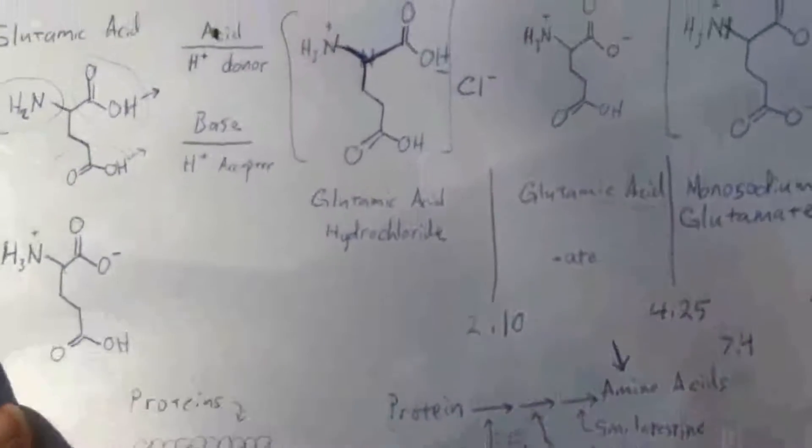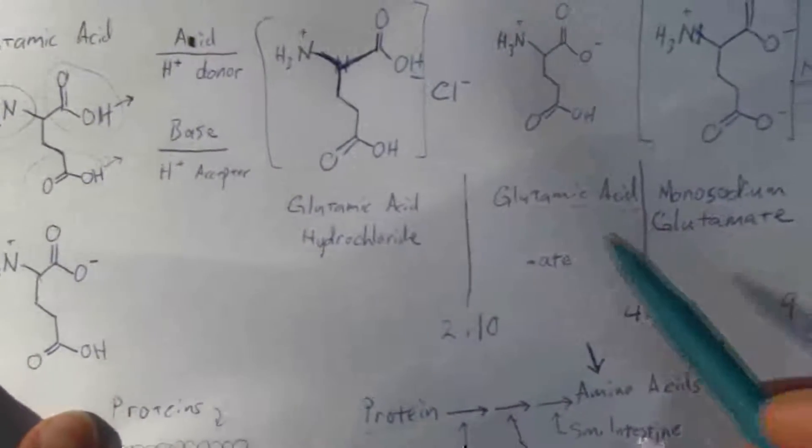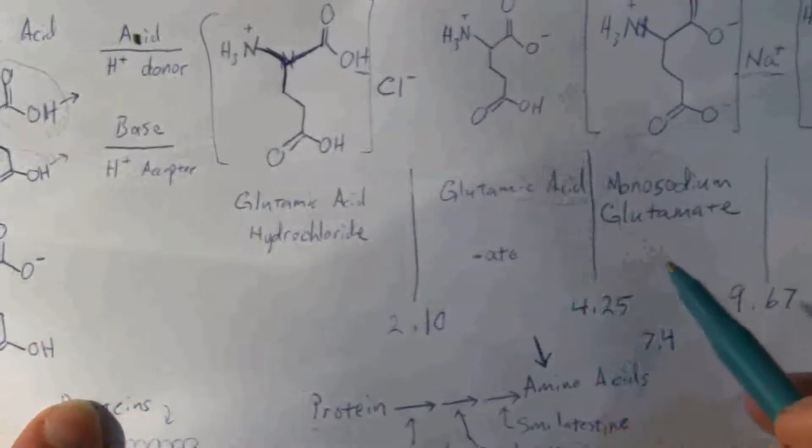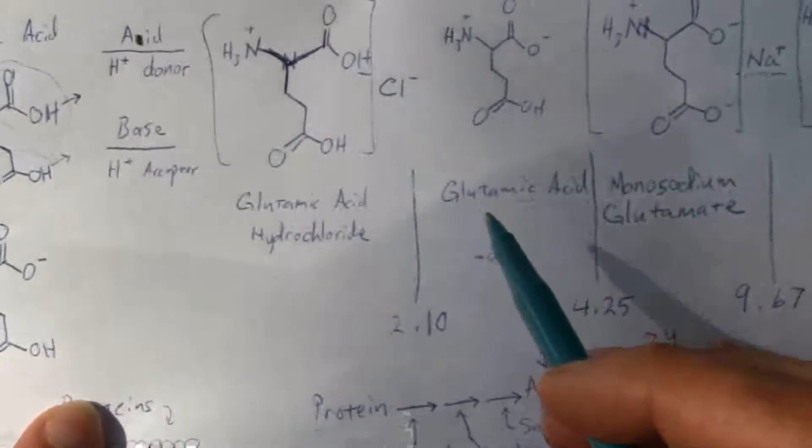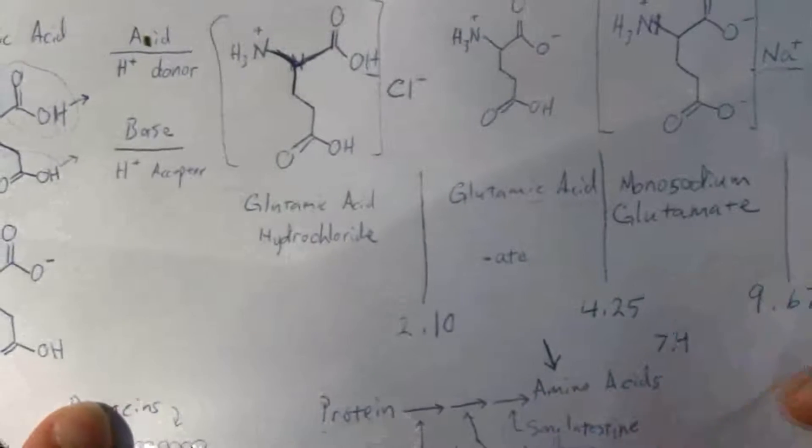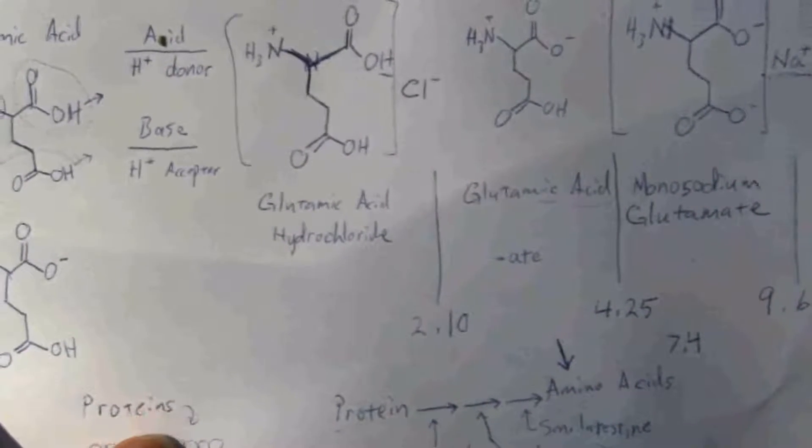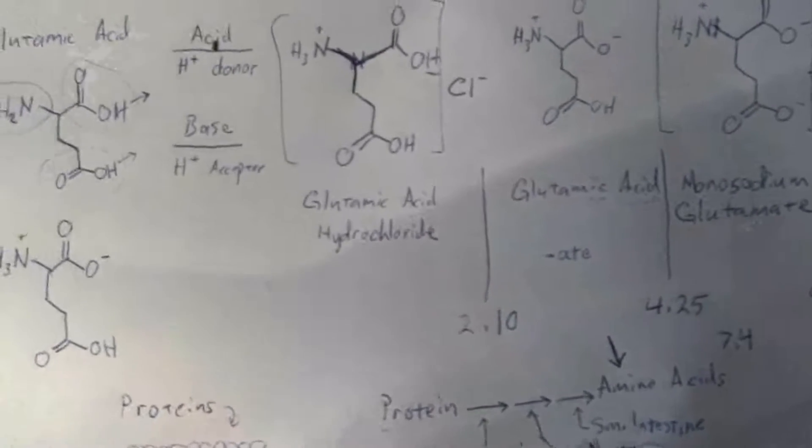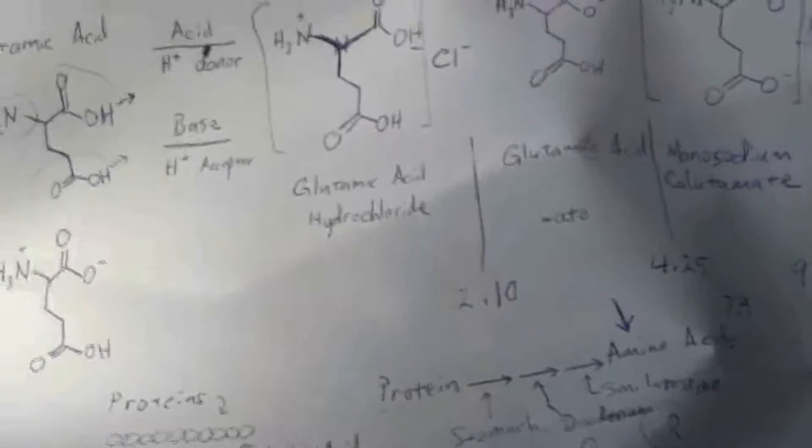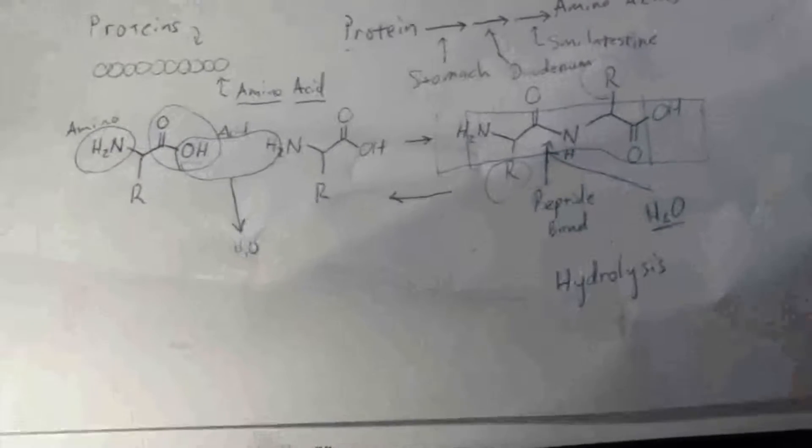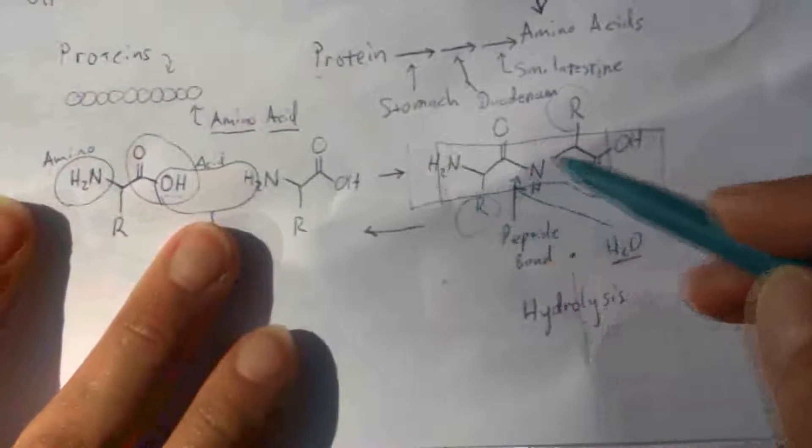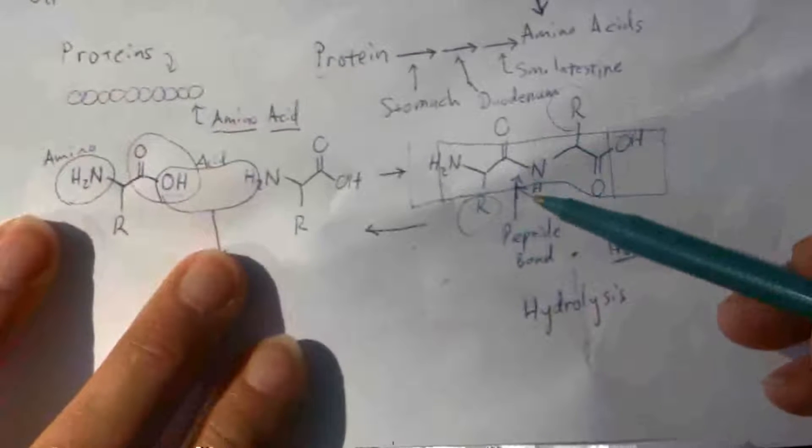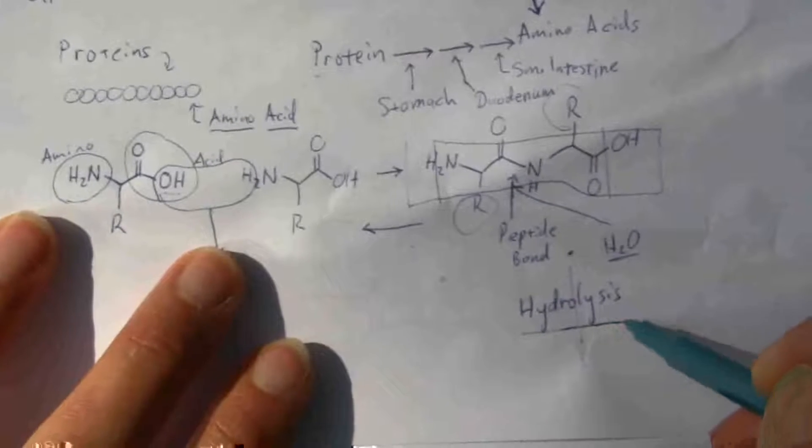Let me point out one other thing. There's another form of, or another name I should say, for this MSG. You could look for monosodium glutamate, MSG, or glutamic acid. You may not have any of that on the ingredients list. It might say something like hydrolyzed vegetable protein. What is hydrolyzed vegetable protein? You remember from earlier in the discussion. Here's our protein. What is that process of breaking those bonds called? Hydrolysis.